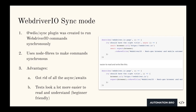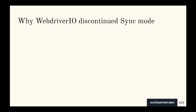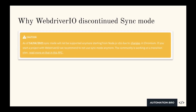However, there are a few things that changed. WebDriverIO discontinued sync mode. If you're not familiar with this change, if you go ahead and install the latest version of WebDriverIO, which is version 7 and above, you're going to notice that in the configuration you will not have the option to install the sync package. At the time of this recording, they got rid of that configuration so that people don't use sync mode anymore. WebDriverIO put out a warning on their website saying that sync mode will not be supported anymore starting from Node version 16, due to some changes in Chromium. And they also say that if you start a project with WebDriverIO, they recommend not to use sync mode anymore.